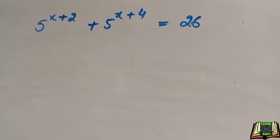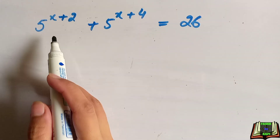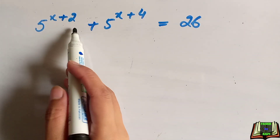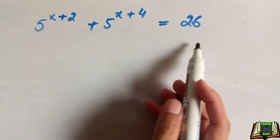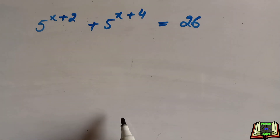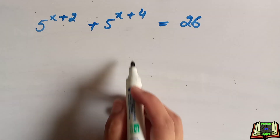Welcome back to our channel. In this video we are going to solve the exponential equation: 5 to the power x plus 2, plus 5 to the power x plus 4, is equal to 26.